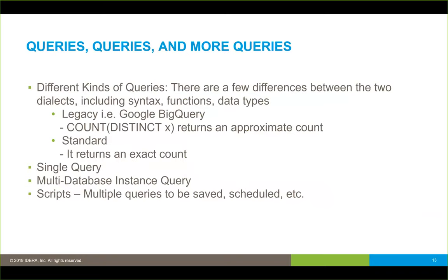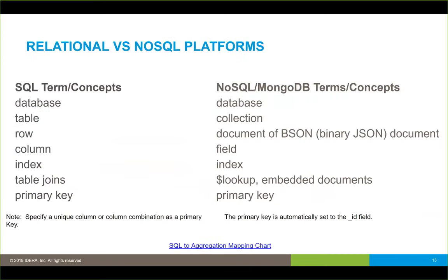As you're dealing with different database platforms, you have different disciplines for each database and different roles for how you're getting the data out. We try to make that standard and enable you to query the data pretty easily. For example, Google BigQuery has legacy SQL and standard SQL — legacy returns an approximate amount where standard returns an exact amount. You can run a single query or a multi-database instance query where you're querying two databases at once. And then you have scripts, which are multiple queries that can be saved and scheduled — a set of commands within a file for pulling data back and forth.